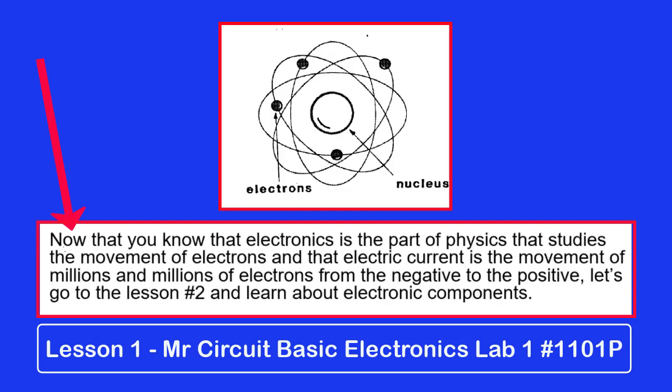This is the end of lesson one. Now that you know that electronics is the part of physics that studies the movement of electrons, and that electric current is the movement of millions and millions of electrons from the negative to the positive, let's learn about electronic components.